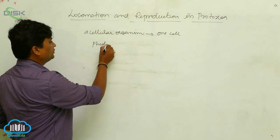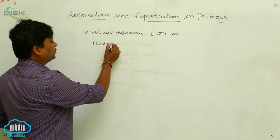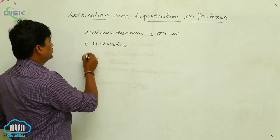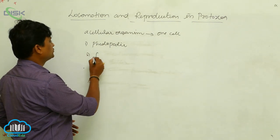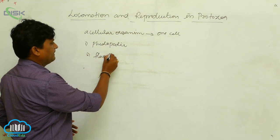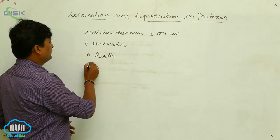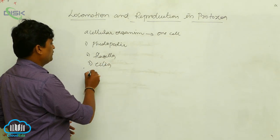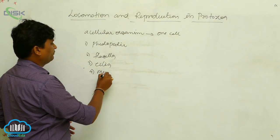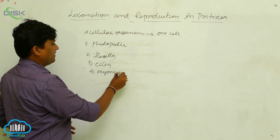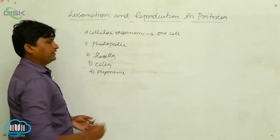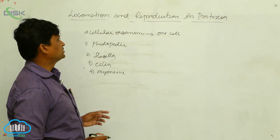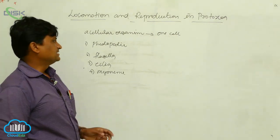The locomotory organelles we will discuss are: first, pseudopodia; second, flagella; third, cilia; and fourth, myonemes. These are the four locomotory organelles seen in protozoan organisms.